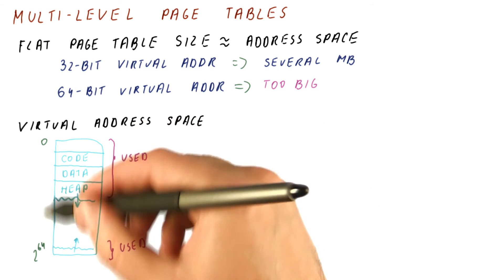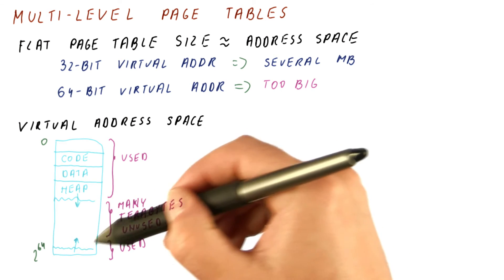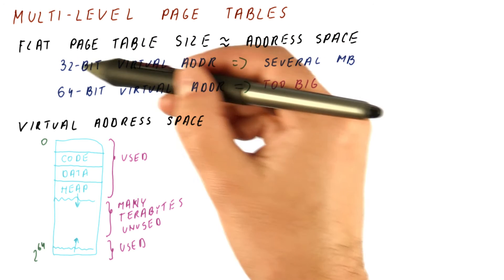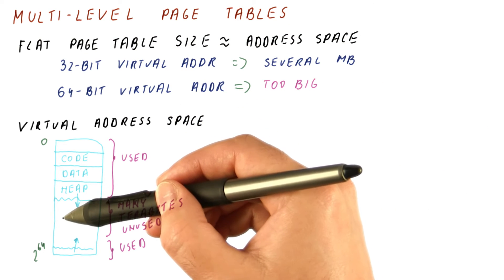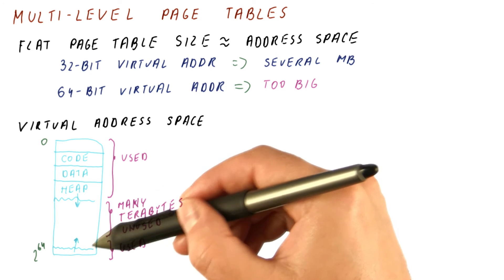In a 64-bit address space, there will be many, many terabytes of unused address space here. But in a flat page table, we had to have a page table entry for each page in this huge space here.